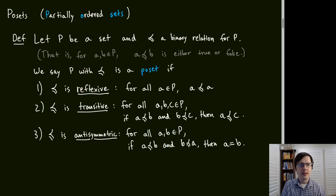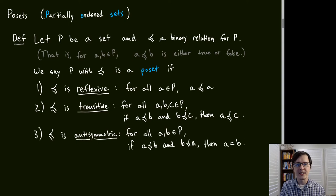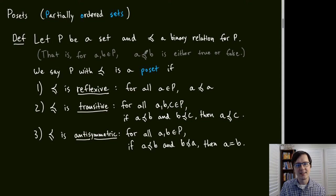To understand these relations better, let's introduce the concept of a POSET — short for partially ordered set. Just as in linear algebra a vector space has an abstract definition with unspecified vectors and operations, a POSET starts with some unspecified set P and an unspecified binary relation — written with a curly ≤ symbol.